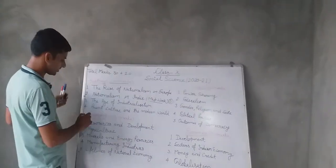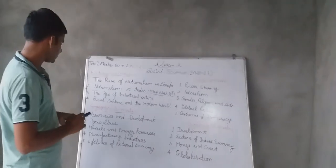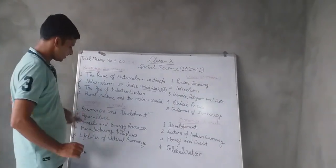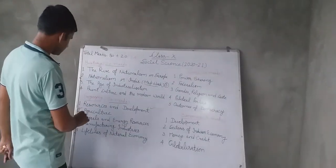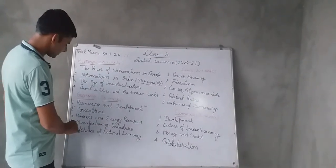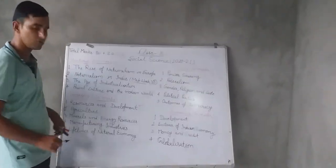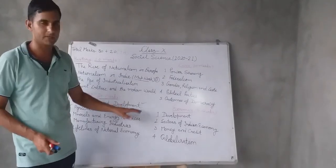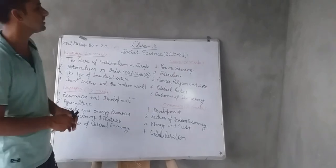Next we will discuss geography, which will also be of 20 marks. There are five chapters: first, Resources and Development, which we have already done; second, Agriculture — it is the fourth chapter in your NCERT book, meaning the second and third chapters will not be in the final examination; third, Minerals and Energy Resources, which is the fifth chapter in your book; fourth, Manufacturing Industry, the sixth chapter; and fifth, Lifelines of National Economy, the seventh and last chapter. Map work is compulsory from all these chapters.